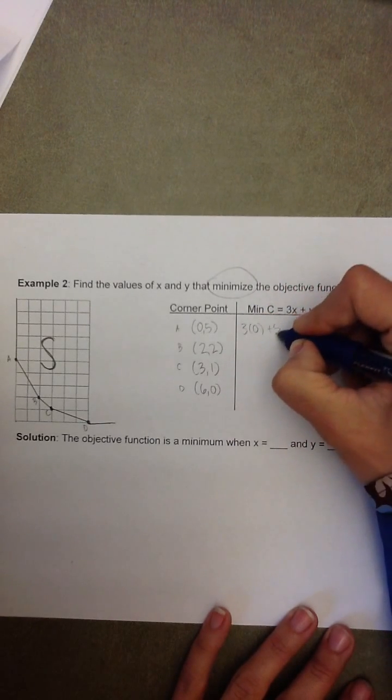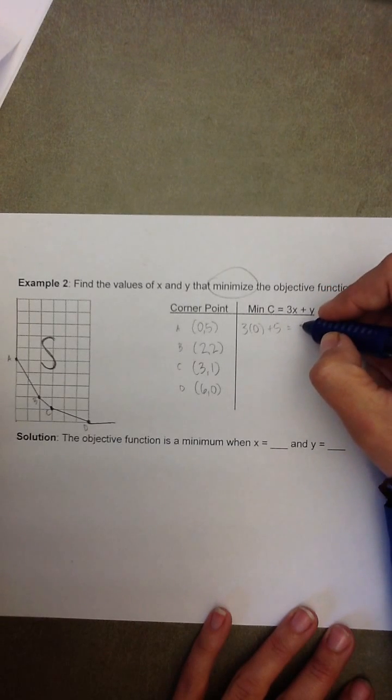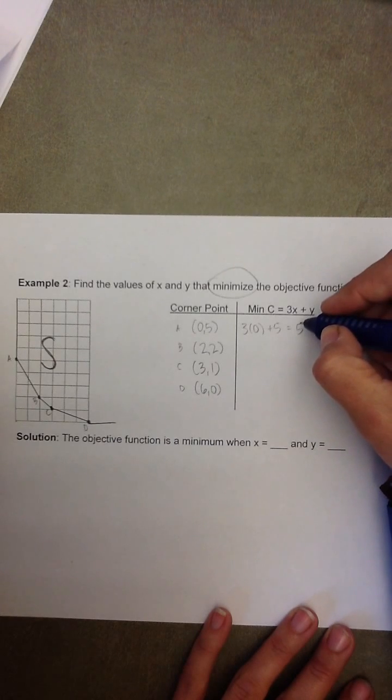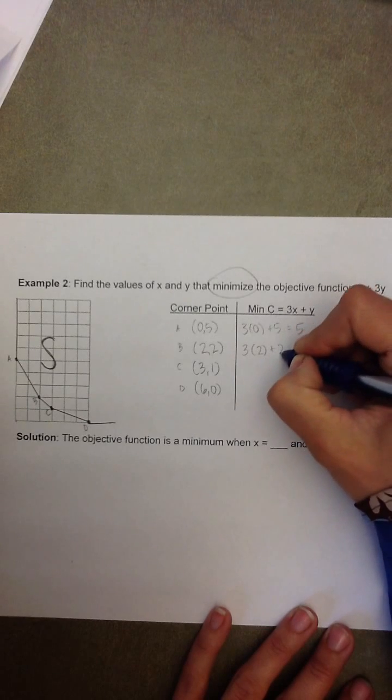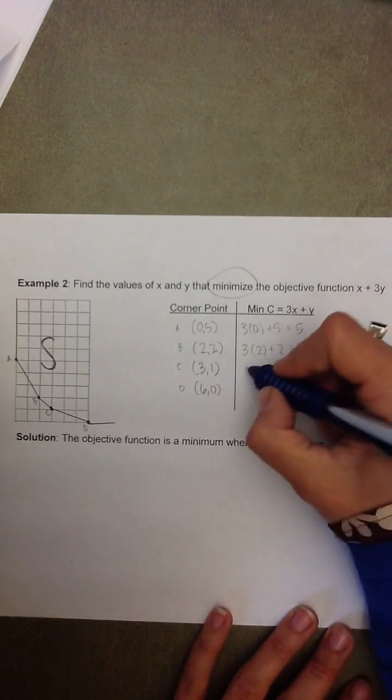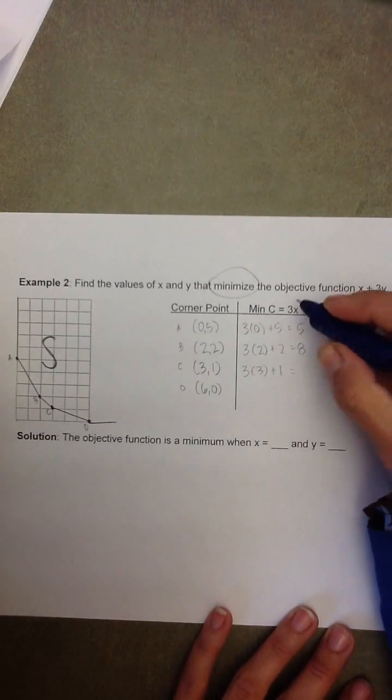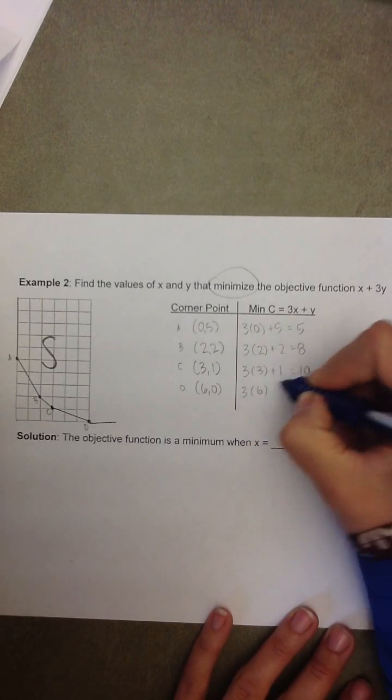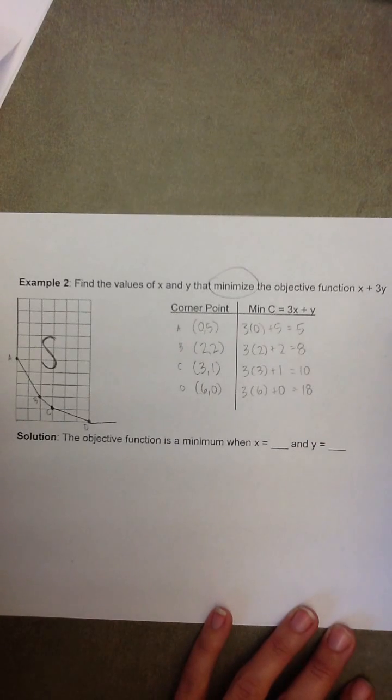3 times 0 plus 5 gives us an objective function of 5. The next 3 times 2 plus 2 gives us an objective function value of 8. The next 3 times 3 plus 1 gives us an objective function value of 10. And finally, 3 times 6 plus 0 gives us an objective function value of 18.